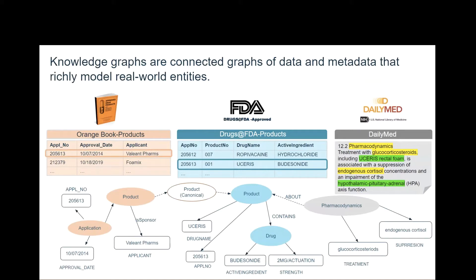Anzo is actually able to leverage both metadata and data to build this knowledge graph. You see this idea of a canonical product — it's combining two different rows coming from relational sources that have the same application number. It can use the application number field as metadata to harmonize those two sources, as well as data from the label in Daily Med that defines treatment information on how a particular drug is being applied, found by surfacing an annotation from that unstructured source.